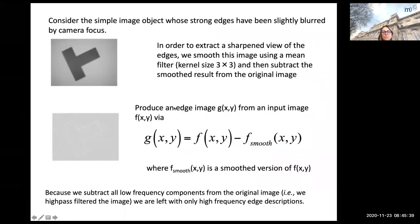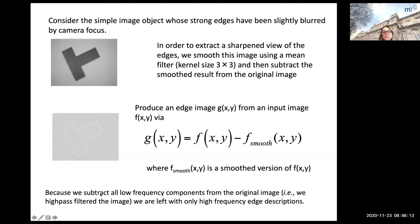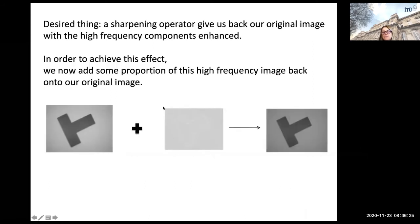This is the same process applied to an image. First take the image, smooth it using a 3×3 mean filter, then subtract that filtered image from the original. Now you have the unsharp mask. We subtract all low-frequency components, leaving only high-frequency edge descriptions. Add the unsharp mask onto the original image to obtain the sharpened image on the right.